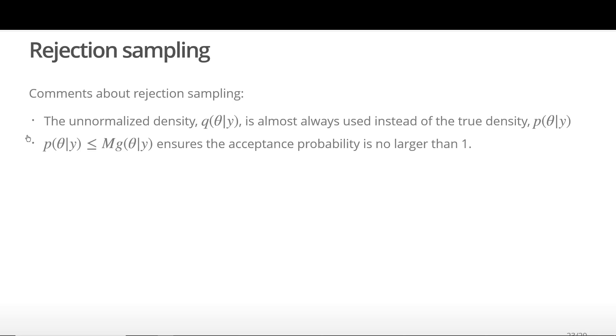Here are a few tips when doing rejection sampling. First, the unnormalized density Q is almost always used instead of P. You don't have to make any changes to the algorithm except using Q instead of P. The fact that the importance ratio is bounded ensures that our acceptance probability is always less than or equal to 1.